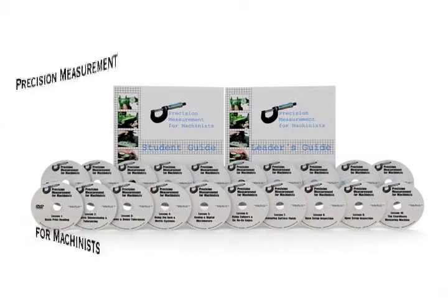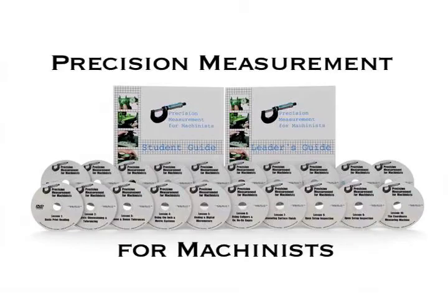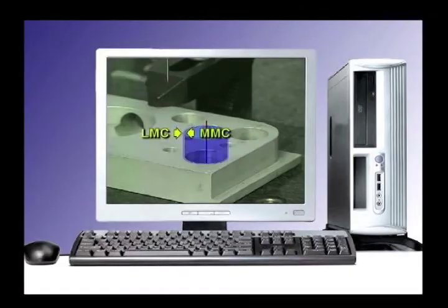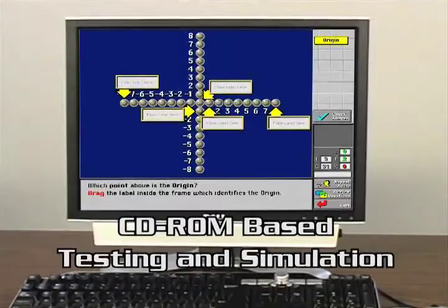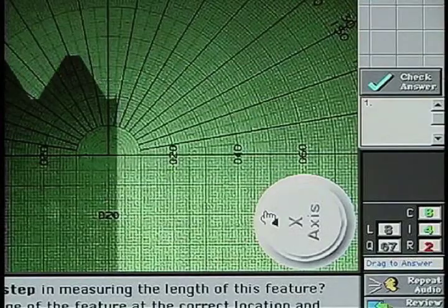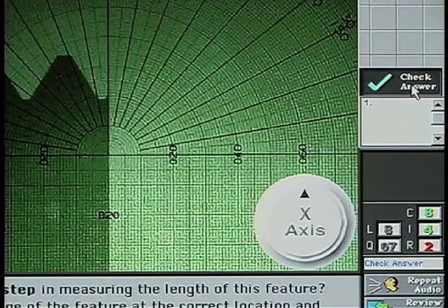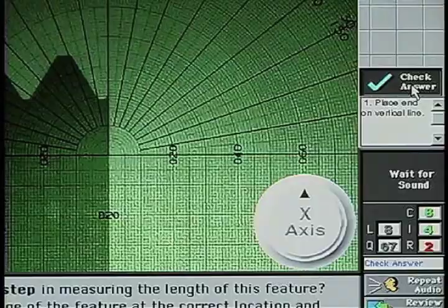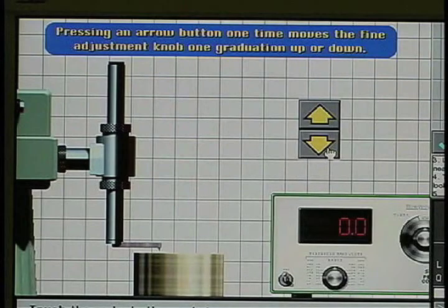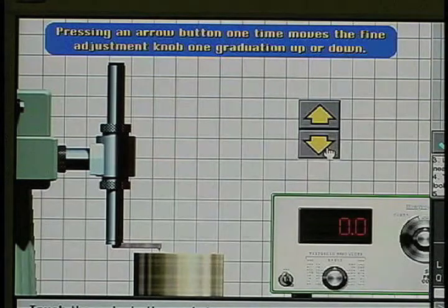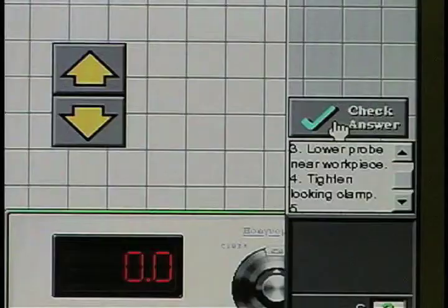Master Task Training Systems introduces Precision Measurement for Machinists. This state-of-the-art courseware combines video instruction with CD-ROM based testing and simulation. These simulations allow your students to try using all types of measuring instruments, and best of all, your students can make those inevitable mistakes without damaging your expensive and hard-to-replace equipment.